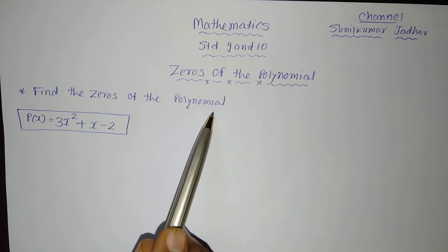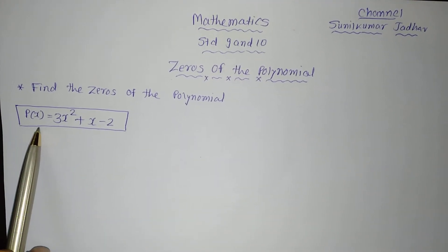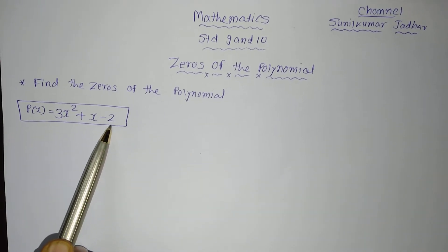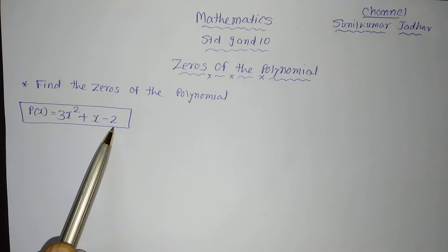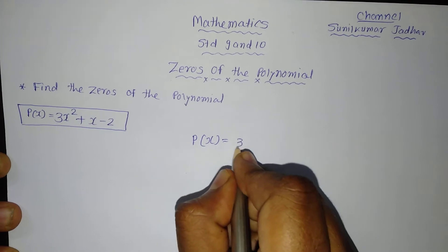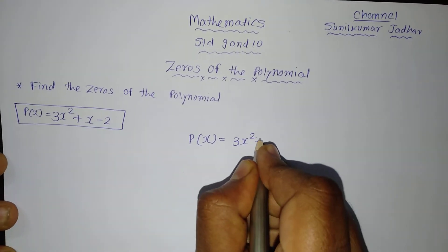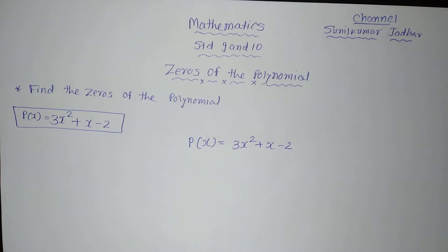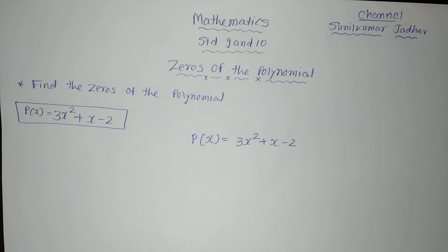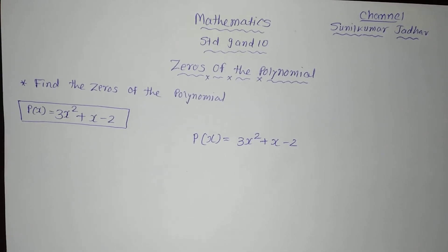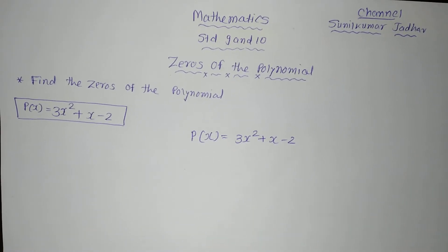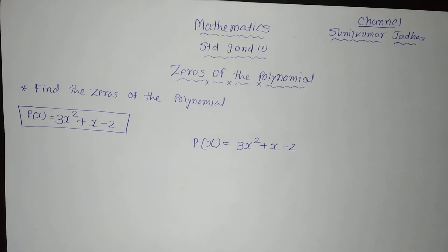Find the zeros of the polynomial. The polynomial given is P(x) = 3x² + x − 2. We need to find out the zeros of this polynomial. So first I will write this polynomial here: P(x) = 3x² + x − 2. When we need to find out the zeros, first of all we have to find out the factors of the given polynomial, then set P(x) equal to zero and find the value of x — that is the zero of the polynomial.